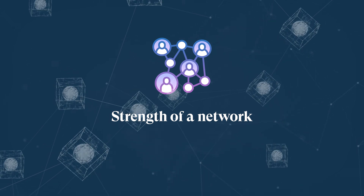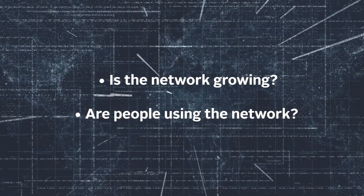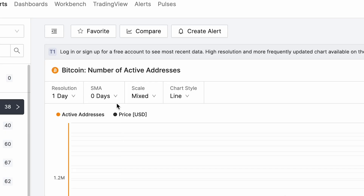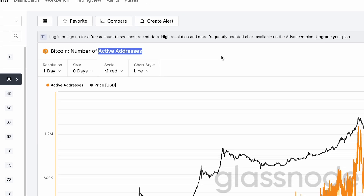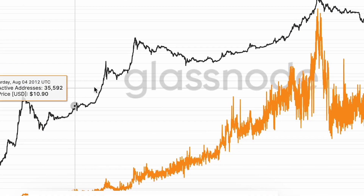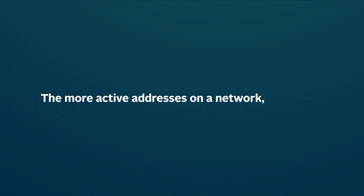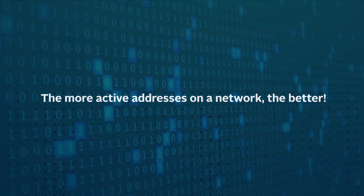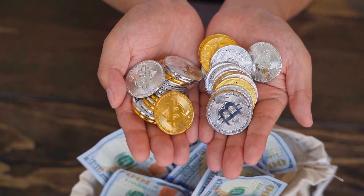On-chain analysis metrics may be used by traders and investors to provide an overview of the network, answering questions such as: is the network growing? Are people using the network? Some of these metrics include active addresses. While they do not necessarily show the number of people using the network, they show the number of addresses being used by individuals, exchanges, or even miners. Simply put, the more active addresses on a network the better, since it's an indicator that more people are using the cryptocurrency, or at least buying it.